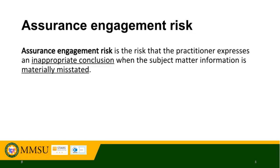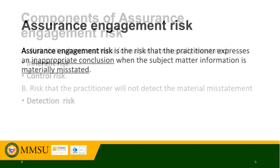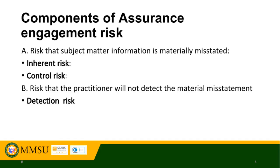Assurance engagement risk is the risk that the practitioner expresses an inappropriate conclusion when the subject matter information is materially misstated. Assurance engagement risk has two components: first, the risk that the subject matter information is materially misstated; and second, the risk that the practitioner will not detect a material misstatement that exists. The first component further consists of two risk factors: inherent risk — the susceptibility of the subject matter information to a material misstatement, assuming no related controls — and control risk — the risk that a material misstatement could occur and will not be prevented, or detected and corrected, on a timely basis by related internal controls. The risk that the practitioner will not detect a material misstatement that exists is called detection risk.